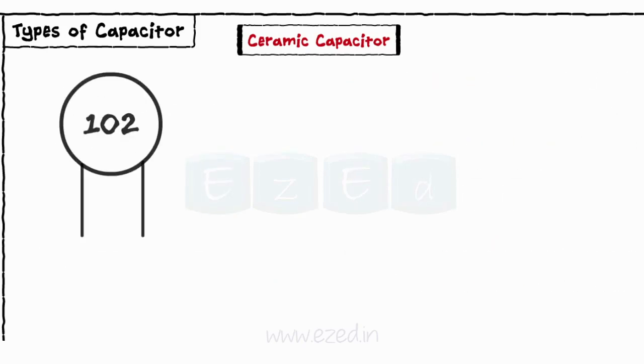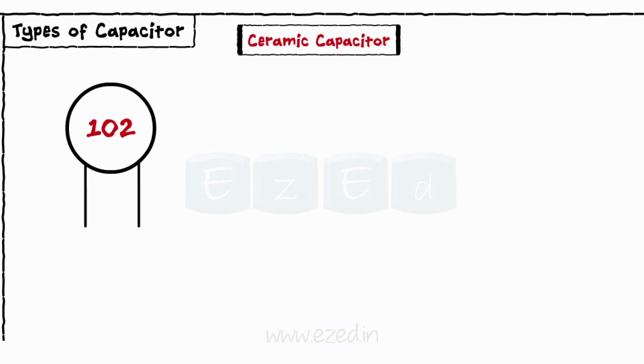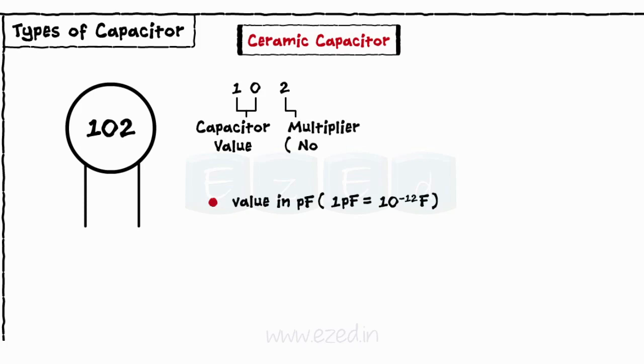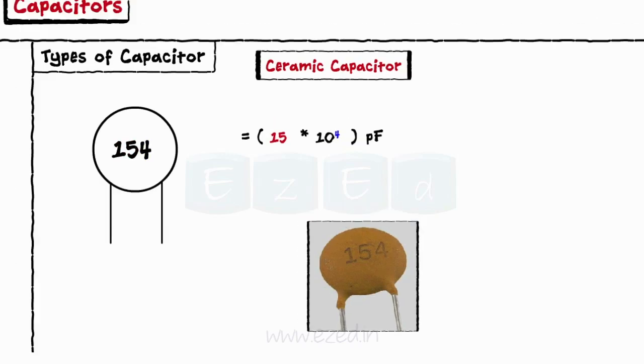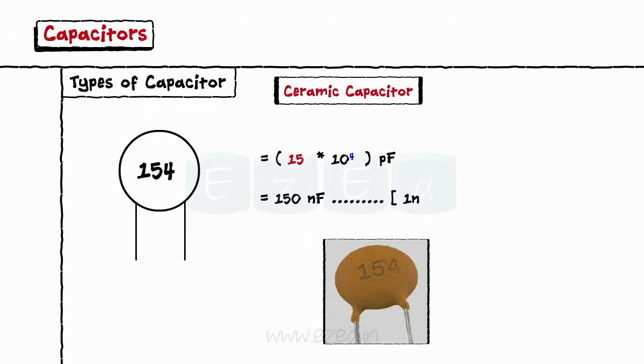Ceramic type of capacitors generally have a three digit code printed on their body to identify their capacitance value in picofarads. Generally, the first two digits indicate the capacitor's value and the third digit indicates the multiplier or the number of zeros to be added. So, if we have a capacitor with number 154 printed on it, its value becomes 15 into 10 raised to 4 picofarads equal to 150 nanofarads.